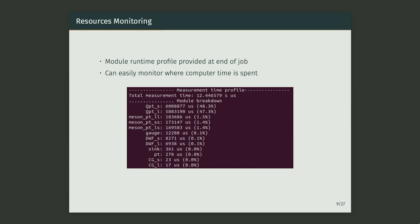Every module is automatically wrapped in timers, and at the end you get a very nice breakdown of exactly how long each module took. You can quickly see at a glance what is taking up all of your time and what things need to be optimized. For example, here 48% of the time is spent in these modules, which are just Dirac operator inversions, and everything else takes a negligible amount of time.